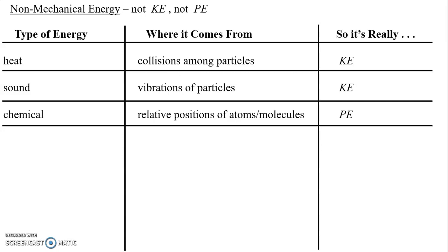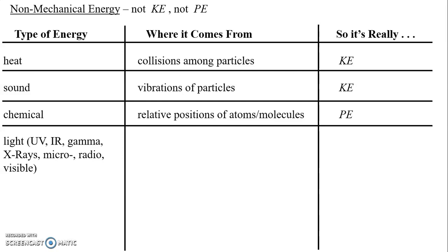The next type of energy is light, which comes in many forms. Go ahead and pause the video and write down some types of light. Usually the first students identify is ultraviolet (UV), then infrared (IR), then gamma, x-rays, microwaves, radio, and the seventh — which students sometimes overlook because it's obvious — is visible light. These are all forms of what we call the electromagnetic spectrum. Later in the year we'll do a whole unit on this and go into much more detail.